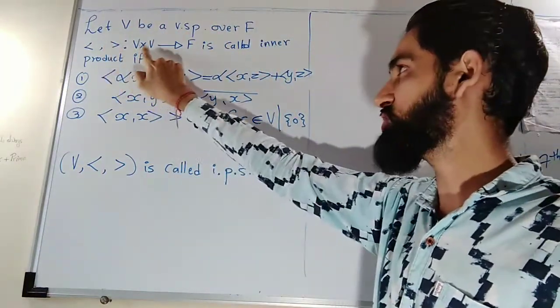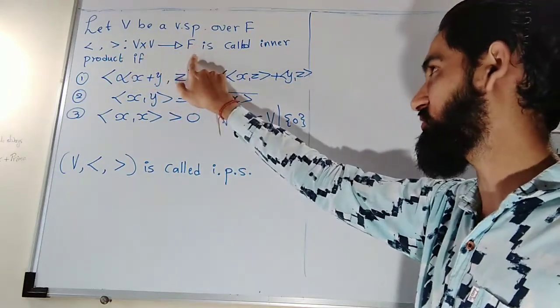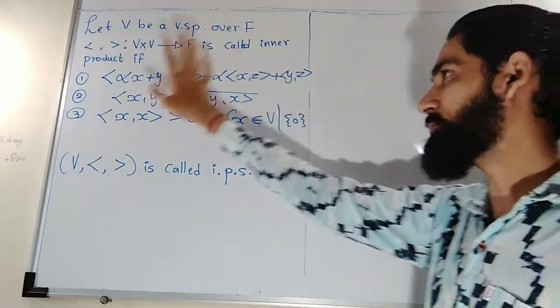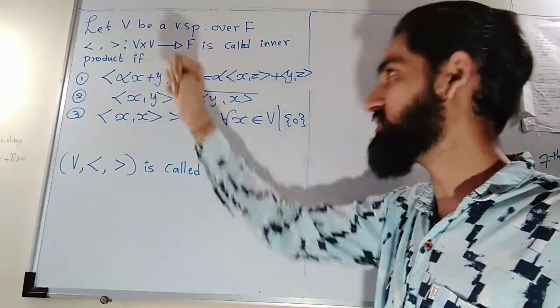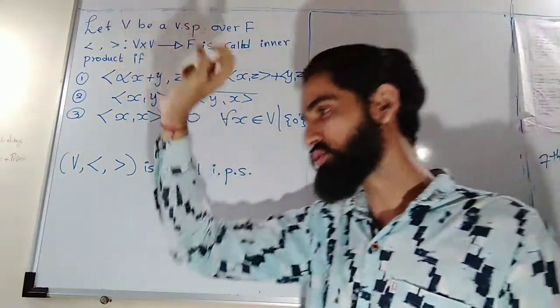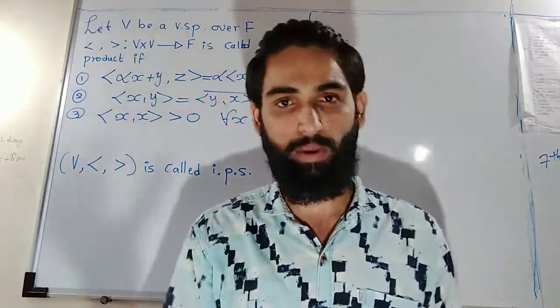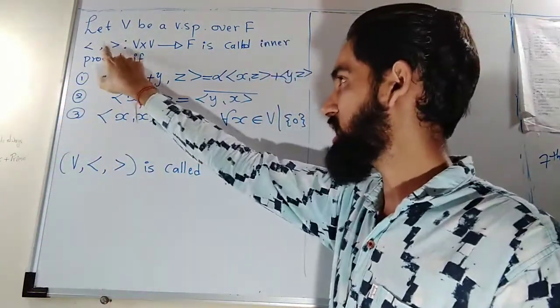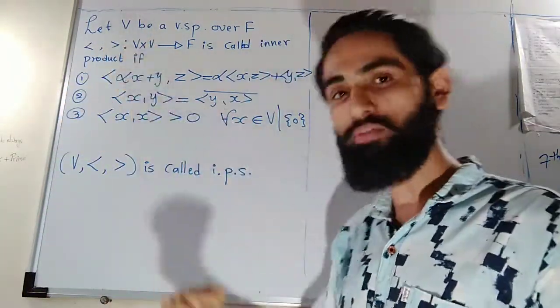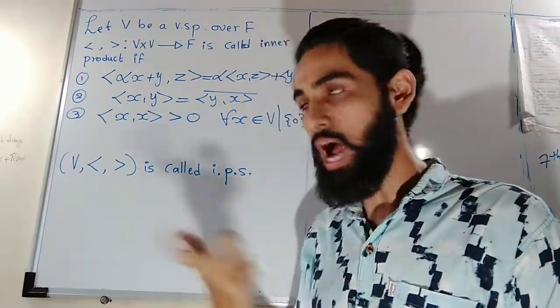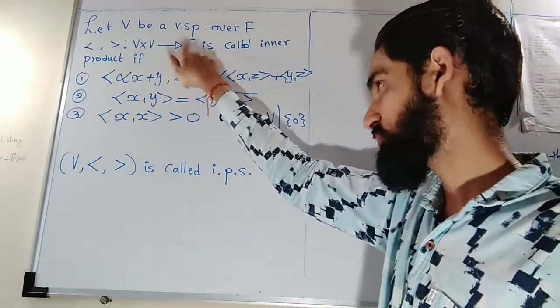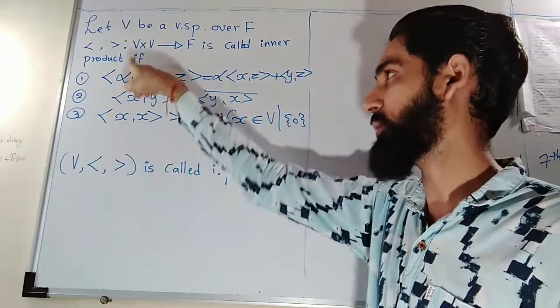An inner product is a function from V cross V to F, called an inner product if it satisfies these three properties. V cross V means it is like a coordinate system where the coordinates are coming from V. That means an inner product takes two elements from the vector space and gives the output as an element of F, and it satisfies these three properties.